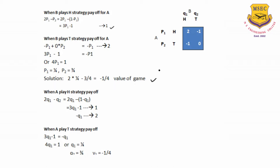Similarly, we calculate Q1 and Q2. When A is playing the head strategy, the payoffs are 2 into Q1 plus minus 1 into Q2, that is 2Q1 minus Q2. When A is playing the tail strategy, the payoffs are minus 1 into Q1 plus 0 into Q2. So we equate these two and get 3Q1 minus 1 equals minus Q1, or 4Q1 equals 1, giving Q1 equals 1/4 and Q2 equals 3/4. And if you substitute, the value of the game equals minus 1/4. So this is the way we solve the problem when the problem does not have a saddle point and the players are playing mixed strategies.